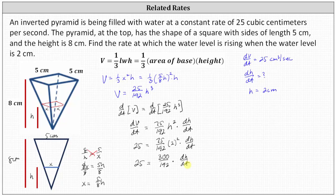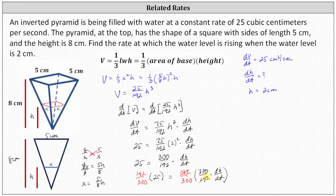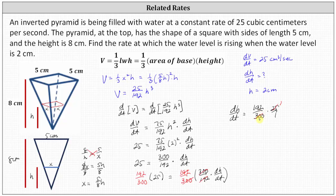To solve for dh/dt, we multiply both sides by the reciprocal of three hundred over one hundred ninety-two, which is one hundred ninety-two over three hundred. On the right we simply get dh/dt. So dh/dt equals one hundred ninety-two over three hundred times twenty-five. Simplifying: there's one twenty-five in twenty-five, twelve twenty-fives in three hundred, and one hundred ninety-two divided by twelve equals sixteen. Therefore dh/dt equals sixteen centimeters per second.